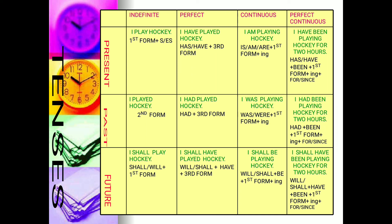In the present perfect continuous, 'for' or 'since' is used. Whenever we can count the time on our fingers, we say 'for.' When we cannot count the time period, we say 'since.' So: I have been playing hockey for two hours — we can count two. Otherwise: I have been playing hockey since morning — since morning, we cannot count from when exactly. So we use 'since.'